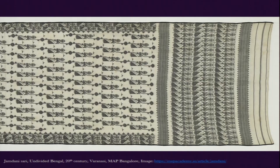Jamdani weaving, which comes very close to brocade weaving, was preferred by many who were not comfortable wearing silk. In a number of Muslim societies, the direct use of silk was not encouraged. Additionally, there are issues around whether silkworms are killed in silk production — concerns about violence that determine whether many religious sects use or avoid silk.